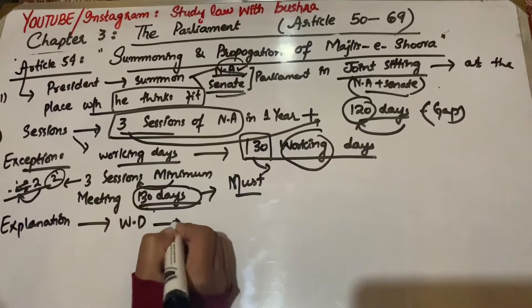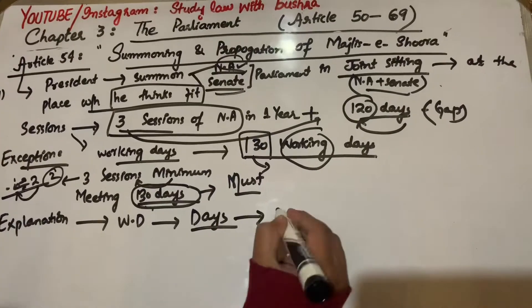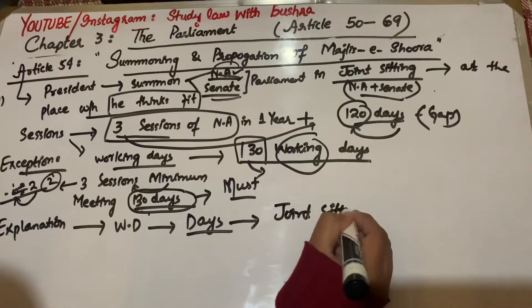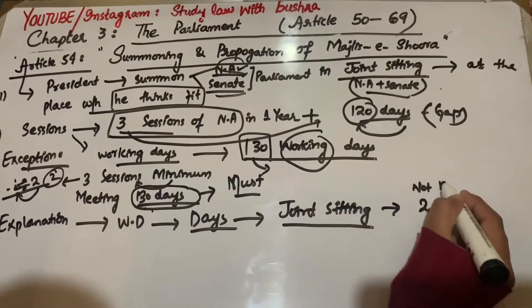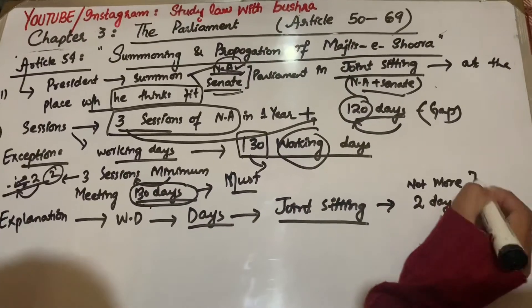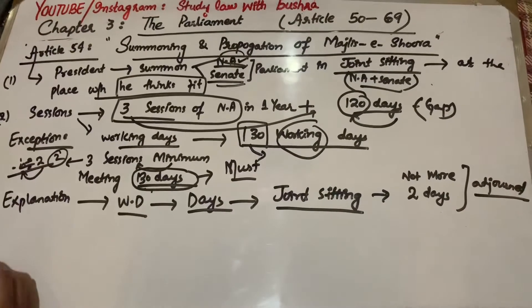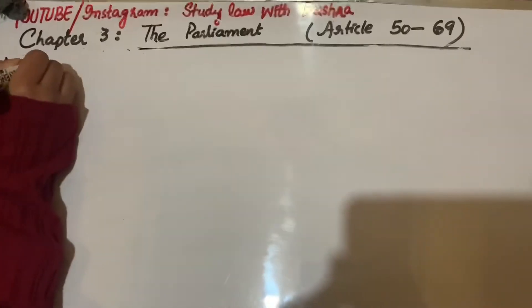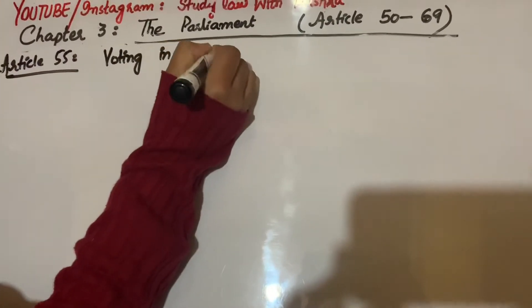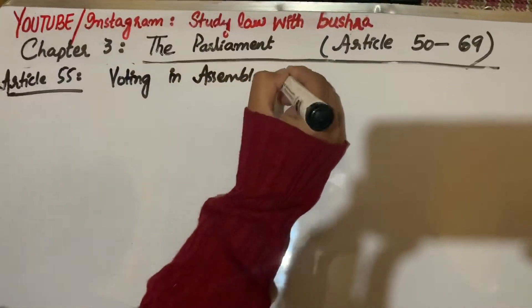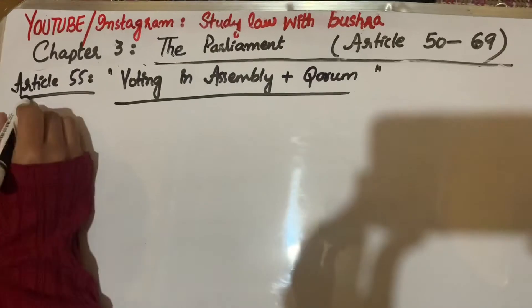So it's mandatory to work 130 working days. It explains that working days include all days when Parliament has any joint sitting. But more than two days when the assembly is adjourned will not be counted in working days. Two days of adjournment are counted in working days, but not more than that.